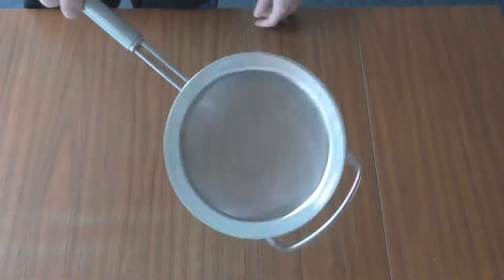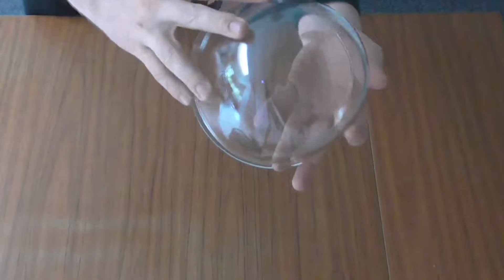So what you need now is a normal kitchen sieve and also a bowl that is transparent and you will see later on in this video why it's really handy for it to be transparent.